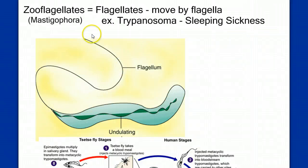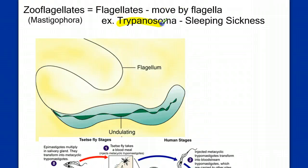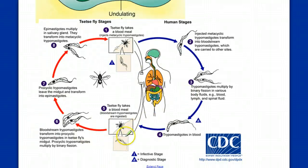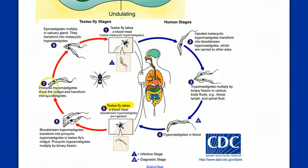Let's move to the zooflagellates or mastigophora — they move by flagella. We see this long whip-like tail helps propel it through its environment. The example we'll use for the zooflagellates is trypanosoma. Trypanosoma is a pathogen — a disease-causing protist — and it causes the disease sleeping sickness. It's transmitted by the tsetse fly, which is the specific vector. The tsetse fly bites a human and the trypanosoma moves in and causes sleeping sickness.